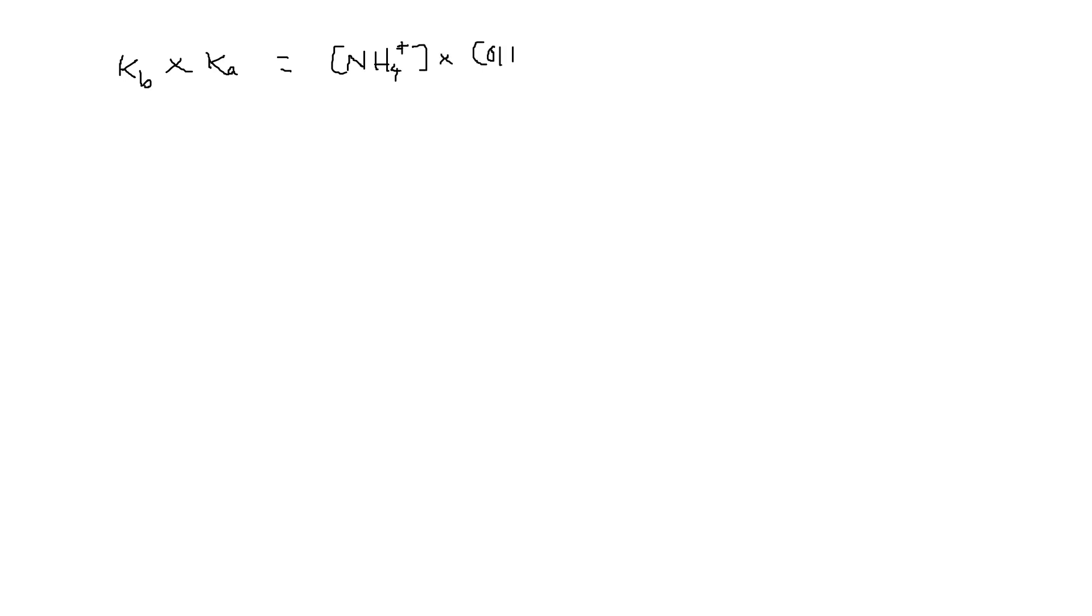multiplied by Ka which we've just written down as NH3 times H3O+ divided by NH4+.